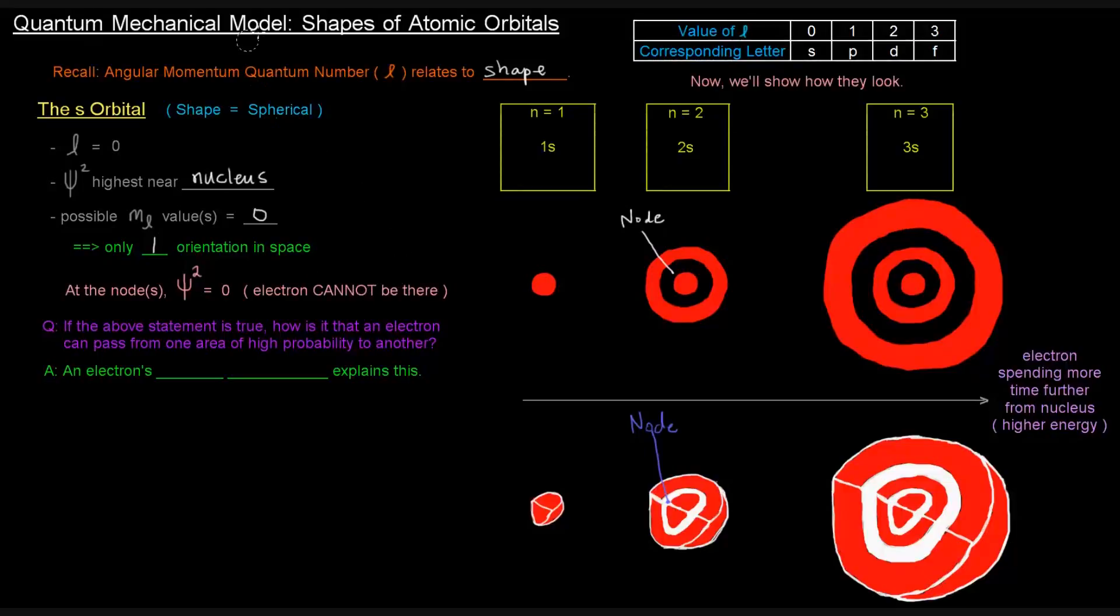That's kind of weird, and we'll get to why that's weird in just a second. So what's important to realize is that for the 1S orbital, there are no nodes. For the 2S orbital, there's one node. And for the 3S orbital, there are two nodes. There are two regions of zero probability, and we can see that here.